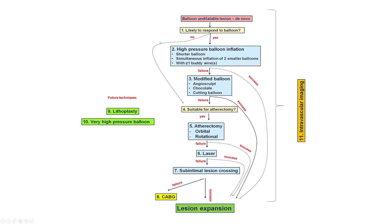If there are no such high-risk features, then one starts with high-pressure balloon inflation — which we had already done — potentially using buddy wires to act as a modified balloon. If that doesn't work, then use a modified balloon such as the AngioSculpt, the Chocolate, or a cutting balloon to modify the lesion. If that fails, atherectomy can be performed, followed possibly by laser, and finally by sub-intimal lesion crossing. In very rare cases, the patient may need coronary bypass graft surgery.